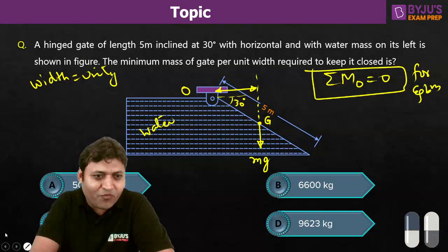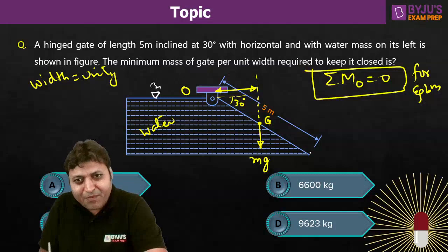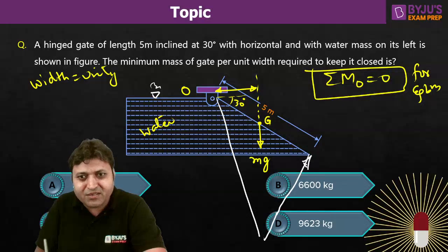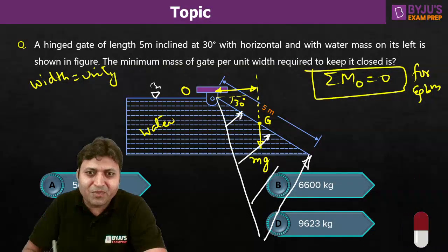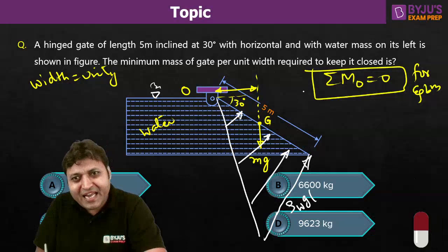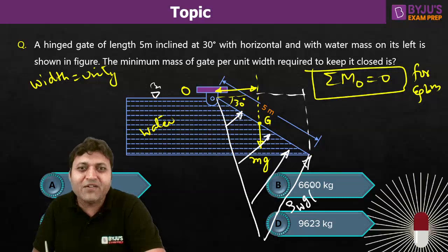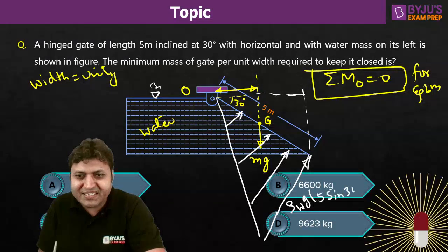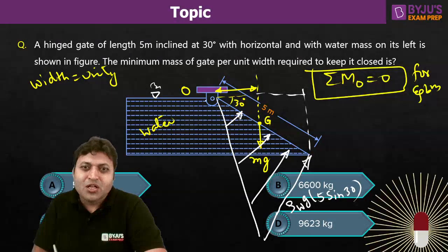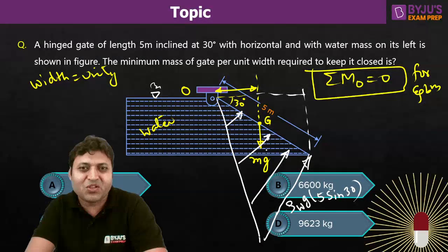Drawing the pressure prism: pressure at the top equals zero (free surface), and pressure keeps increasing. The pressure prism is a triangle. The pressure at the bottom is rho_water·g·(5 sin 30). The centroid of this triangle gives the depth of centre of pressure.